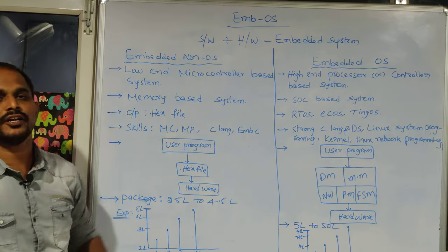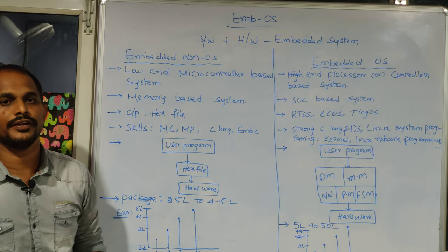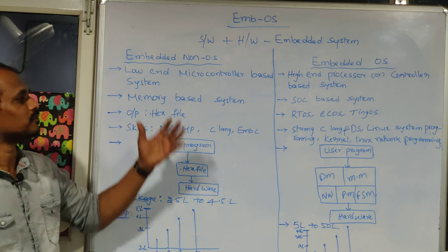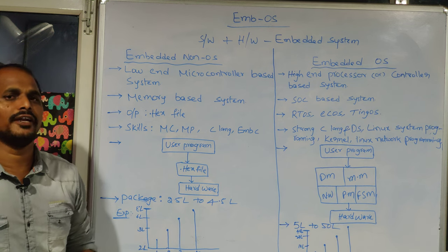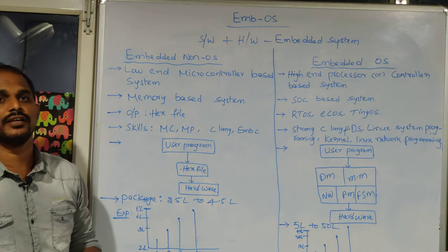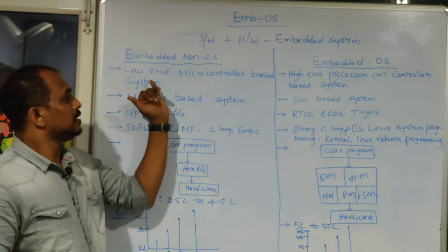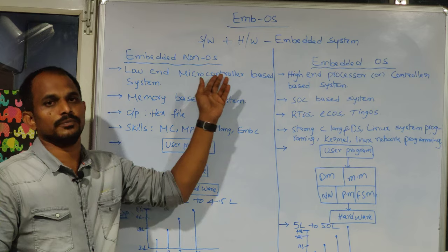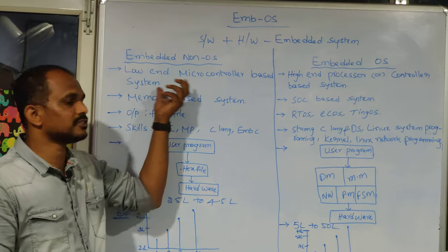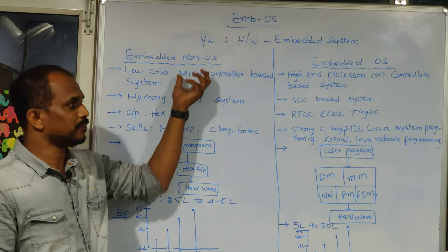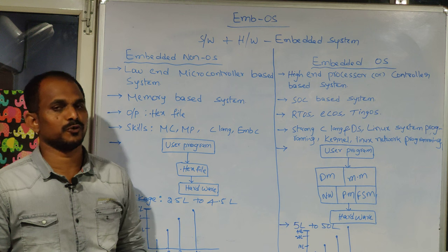On the embedded non-operating system side, you may have heard of low-end microcontrollers like 8051, Arduino, and ARM controllers. In non-operating system embedded development, you write a standalone embedded C program, create a .hex file, and run it on the board. These are low-end microcontroller based systems — either 8-bit or 16-bit. Embedded operating systems, by contrast, work on higher-generation devices like 32-bit and 64-bit processors.